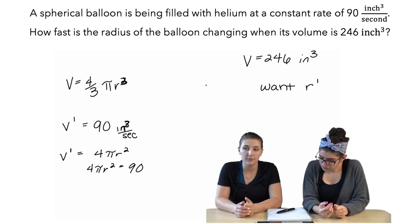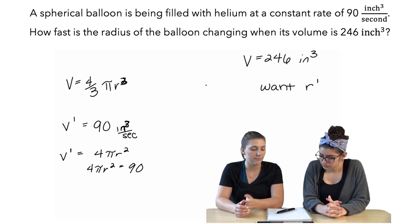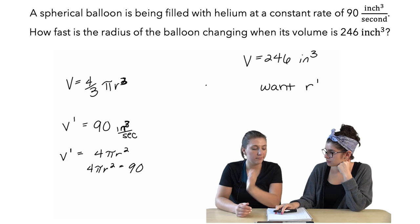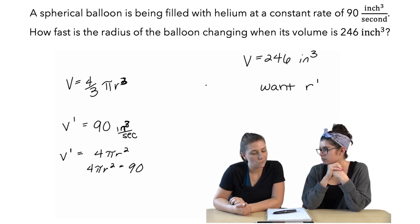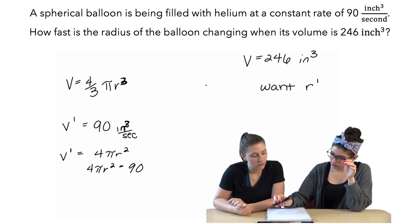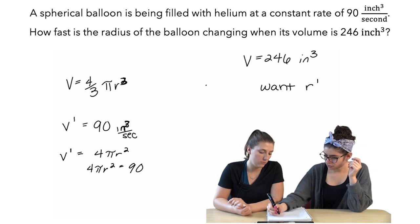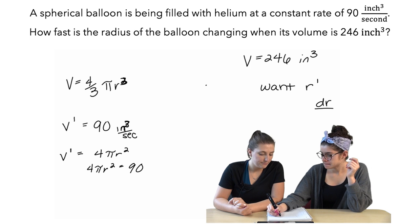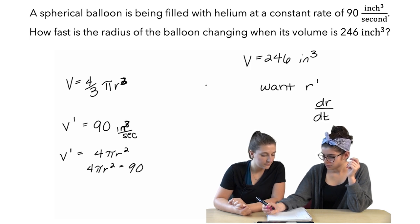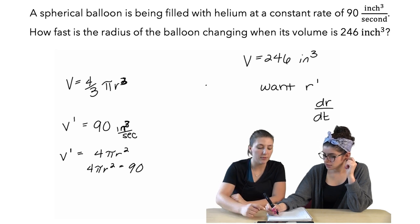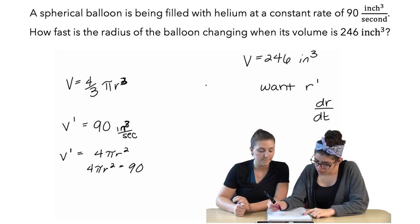Right. So, when we have... wait, what is v prime? What do you mean? Like... Well, you want... we want an r prime, which is dr dt? Is it... Well, if it's... Yeah, that's what we want. But, right now, what we're doing... Okay.